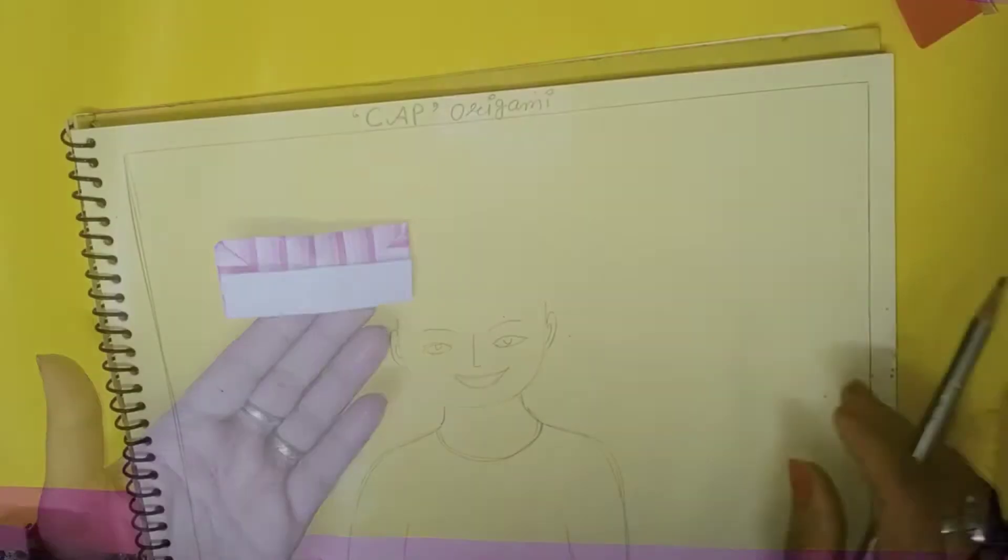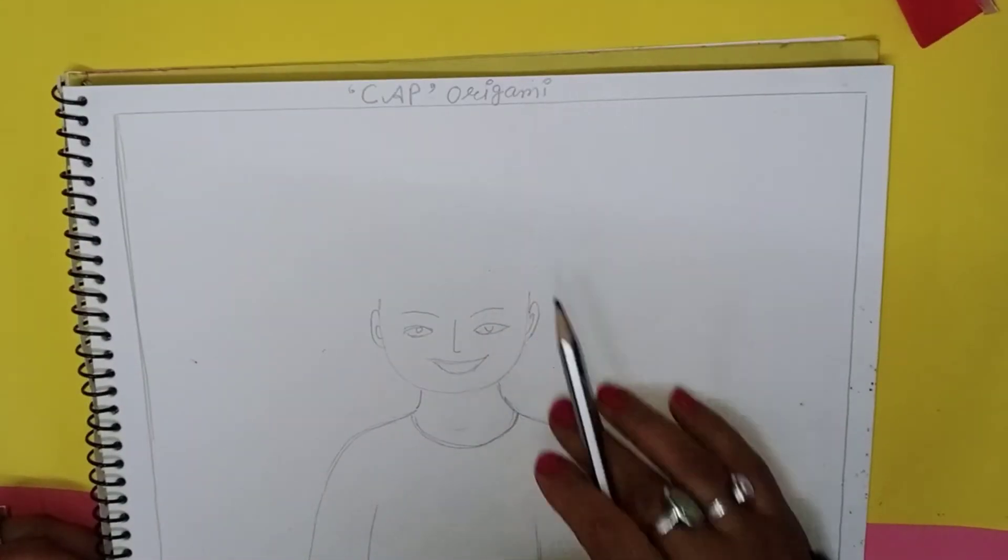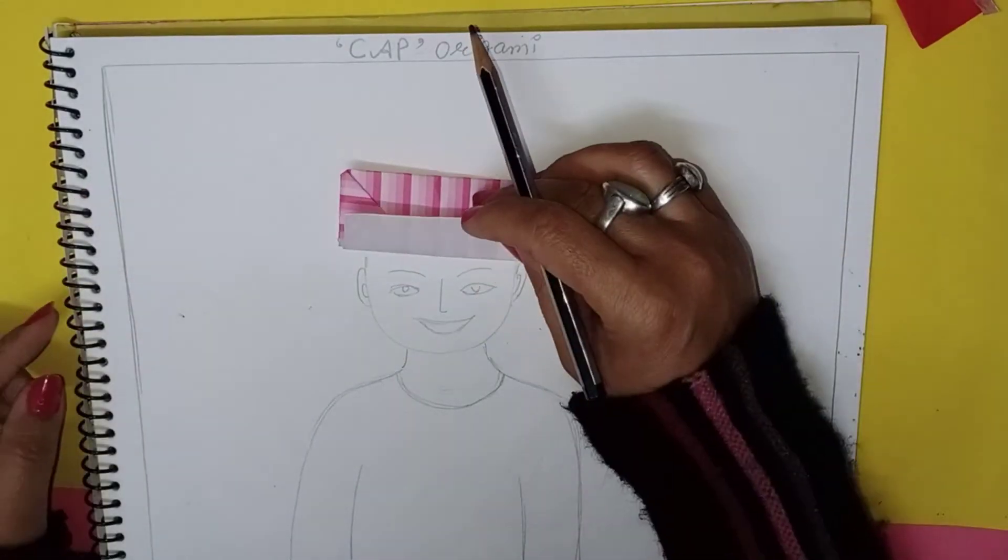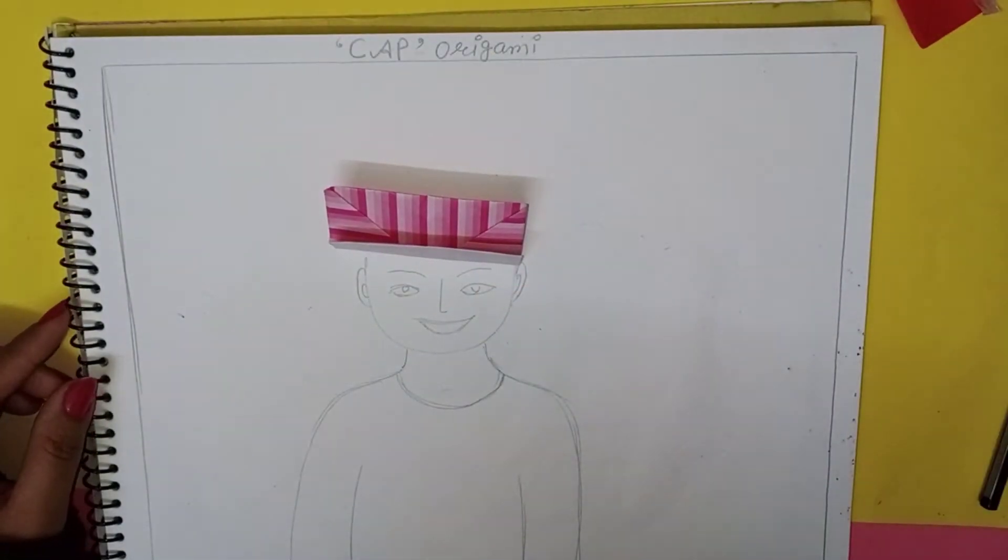Your cap is ready. Take your art file. Give margin line. Write the topic: cap origami. Then draw one boy and girl, anyone.